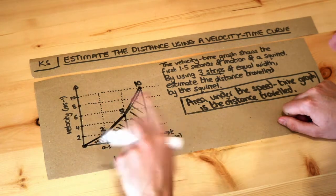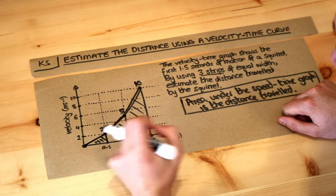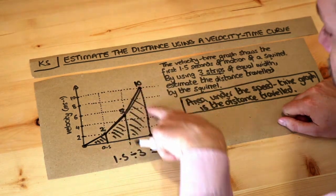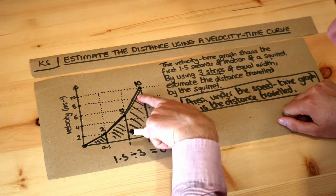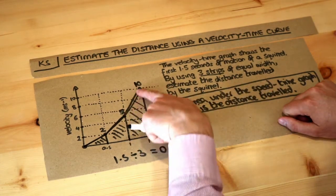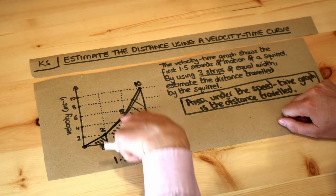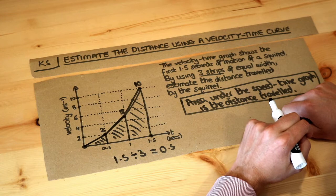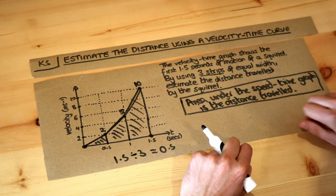You can also see that this is going to slightly overestimate the area, and hence slightly overestimate the distance, because can you see that trapezium is slightly bigger than the area under the curve? The straight line here goes above the curve, so this area of the trapezium is going to be slightly bigger than what we actually have under the curve. So now we just need to find the area of each of these three things.